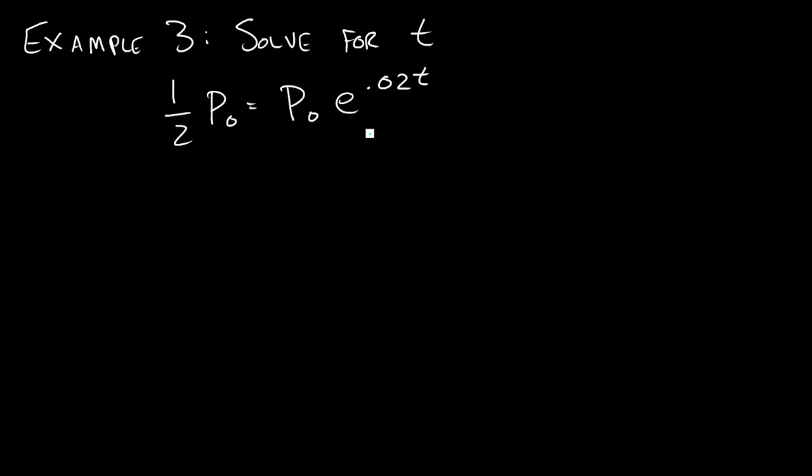But when it comes down to the algebra, let's try to apply the same concepts we applied in example 1. So we're going to try to get this thing all by itself. So the way we do that is we would divide each side by P0. And once we do that, we're going to see, oh look, the P0's here cancel out, and the P0's here also cancel out, leaving me with 1/2 = e^(0.02t).